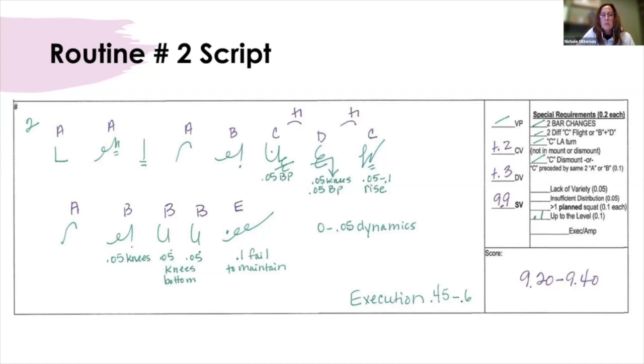So execution, 0.45 to 0.6 from the 9 start value, including the up to the level. So 9.2 to 9.4 is the range and 9.3 would be the average score. Let's go ahead and watch the replay.